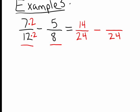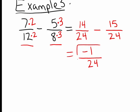For the second fraction, 8 turned into 24, so I must have multiplied by 3. I do the same to the numerator: 5 times 3 became 15, and 8 times 3 became 24. Now I have fractions with a common denominator. I now subtract across the top: 14 minus 15 is negative 1, with a denominator of 24. So my final answer is negative 1/24.